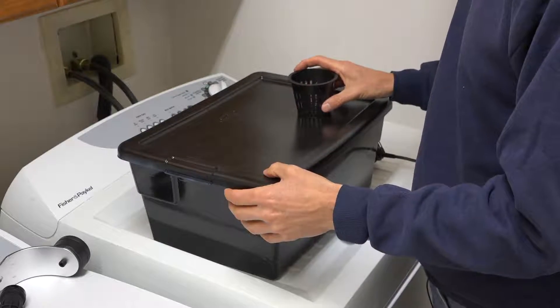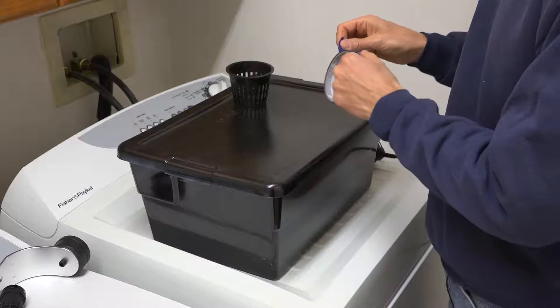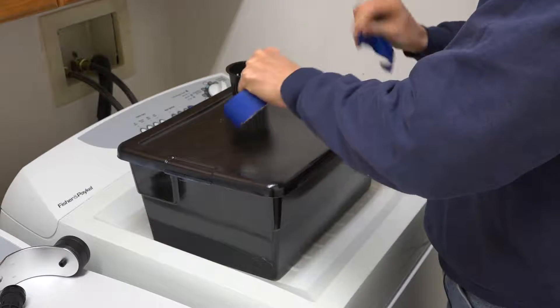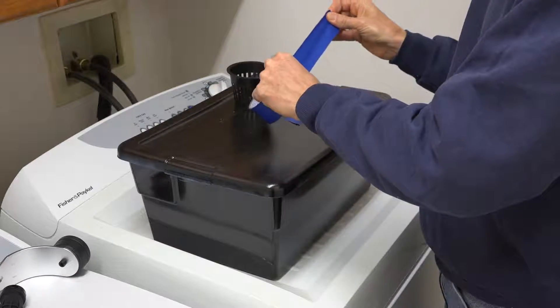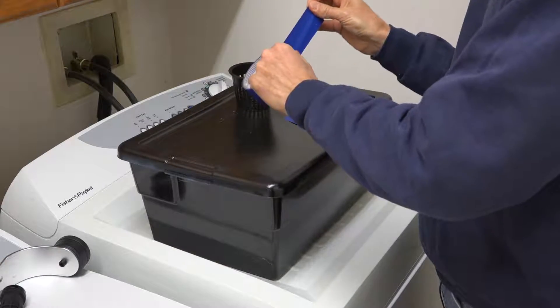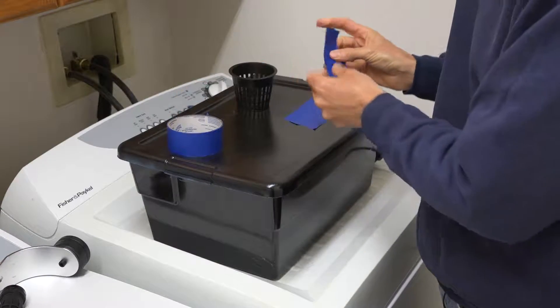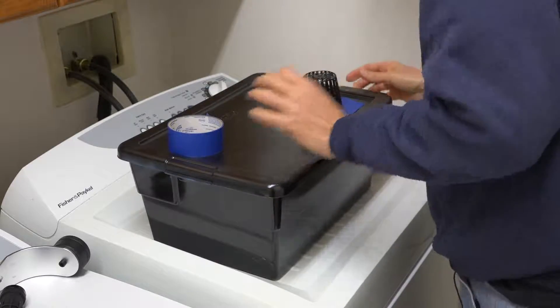So what you do is first you put some tape, some of this blue tape over where you want to put it. And what this is going to do is stop the plastic from flying all over the place and making an absolute mess.